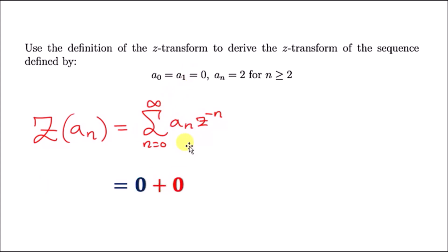Then when you plug in n = 2, look what happens: you're going to get 2z^(-2). If you plug in n = 3, you get the same thing but instead of n being 2 it will be 3, and of course this follows on forever, so this is going to be infinite.